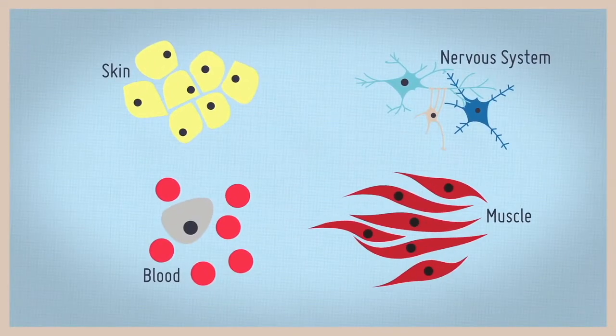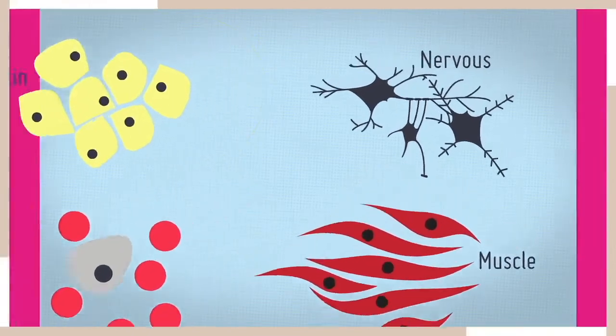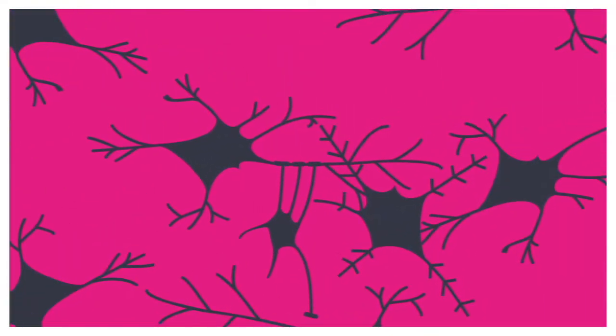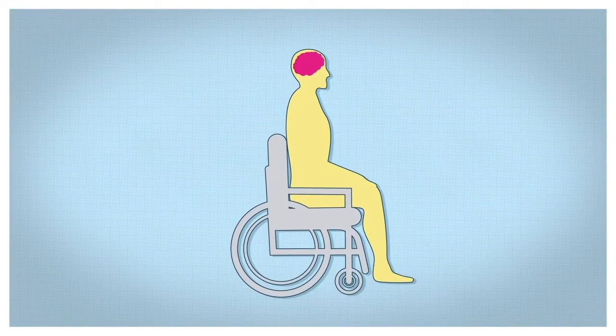Unlike some other organs, the nervous system has very little capacity for regeneration, meaning that cells damaged by trauma or disease are not officially replaced, leading to permanent disability in many patients.